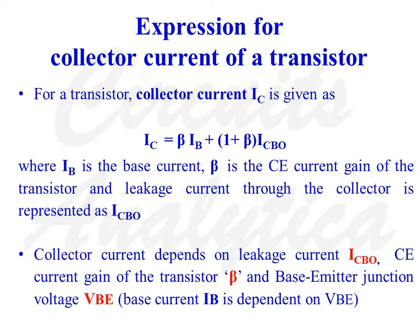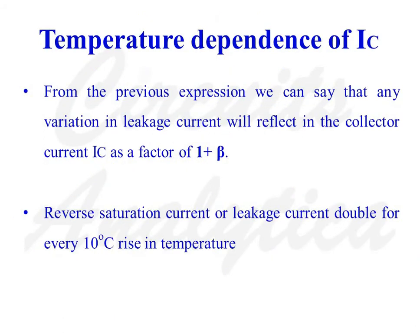For a transistor, collector current IC is given as IC equals beta times IB plus (1 plus beta) times ICBO, where IB is the base current, beta is the common emitter current gain, and ICBO is the leakage current which flows through the collector. So collector current depends upon three parameters: beta, leakage current ICBO, and base-emitter junction voltage VBE. Any variation in leakage current will reflect in the collector current IC by a factor of (1 plus beta).